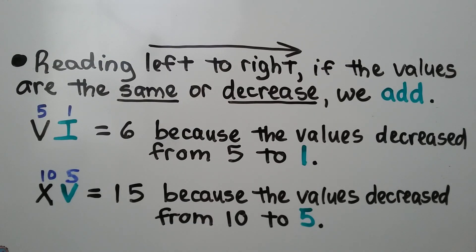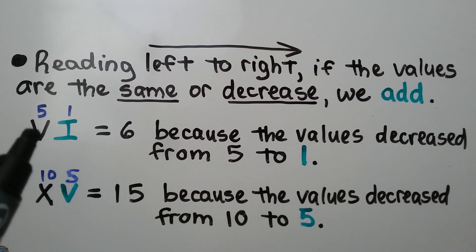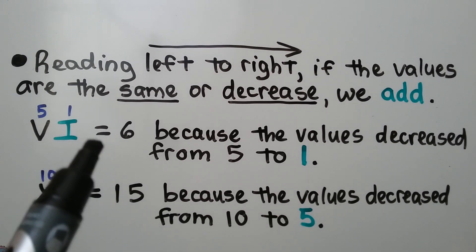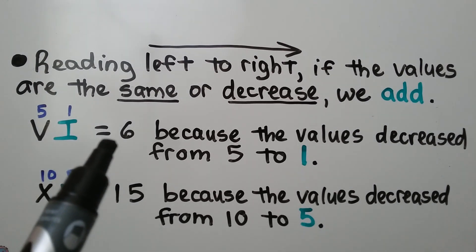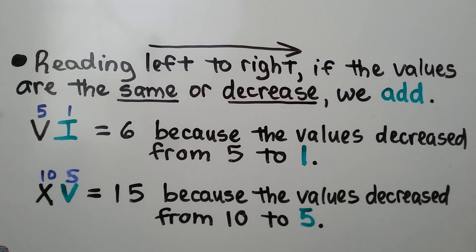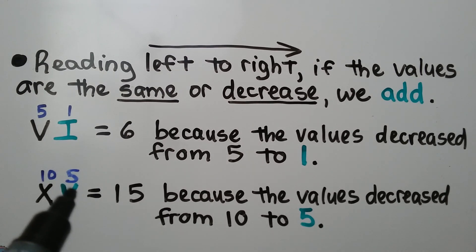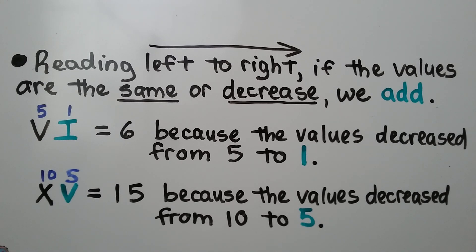Reading left to right, if the values are the same or decrease, we add. Here, the value goes from a 5 down to a 1 — it's decreasing — so we add them together, which equals 6. Here, the value goes from a 10 and decreases to a 5, so we add them together: 10 plus 5 is 15.